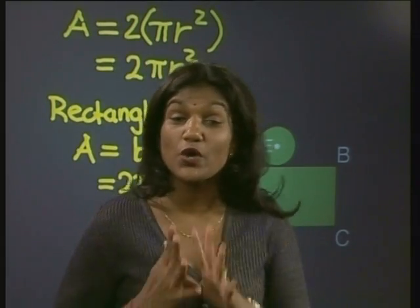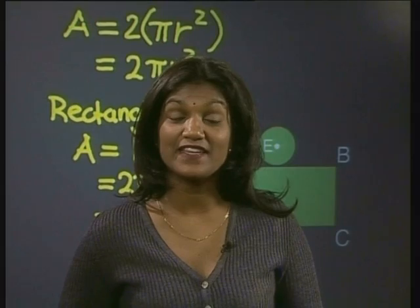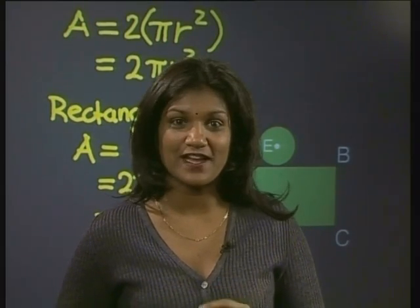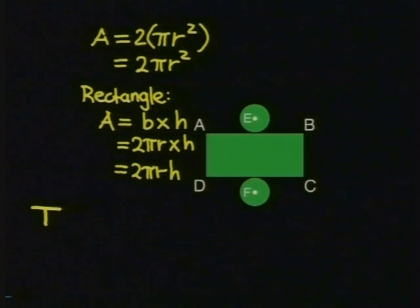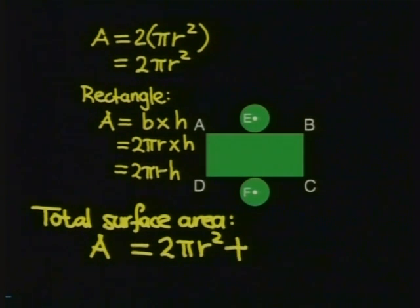Now, we can work out the total surface area for our cylinder. All we need to do is add the area of our two circles to the area of our rectangle. So, the total surface area is: A = 2πr² + 2πrh.